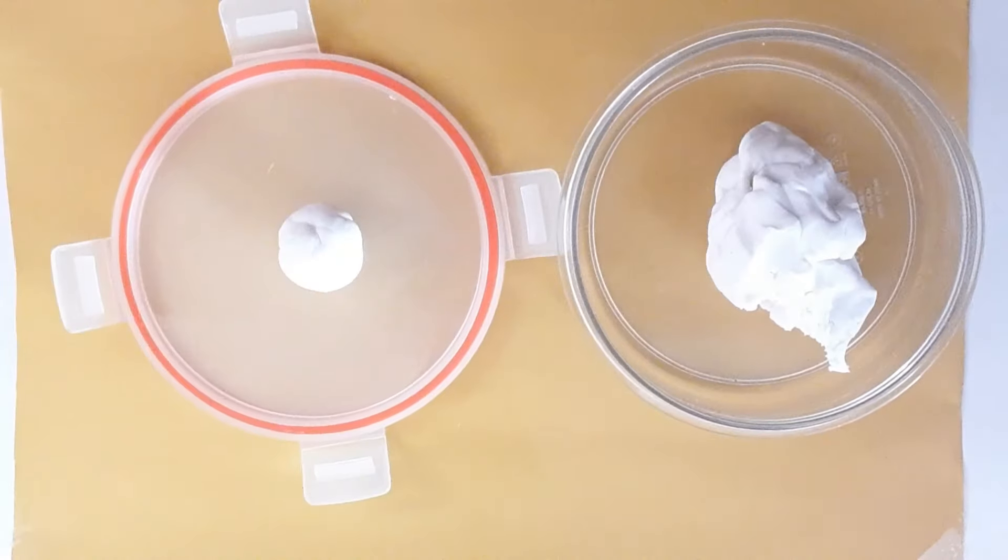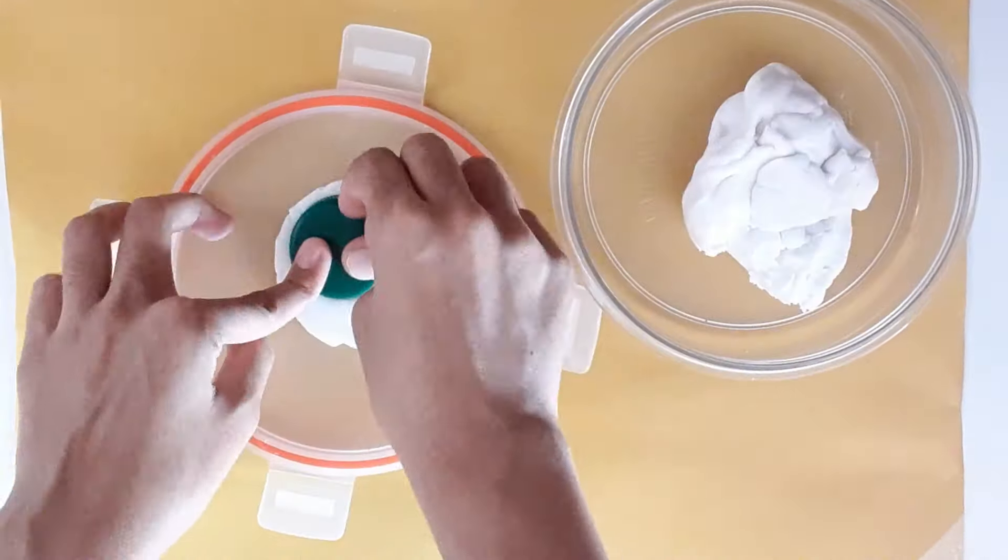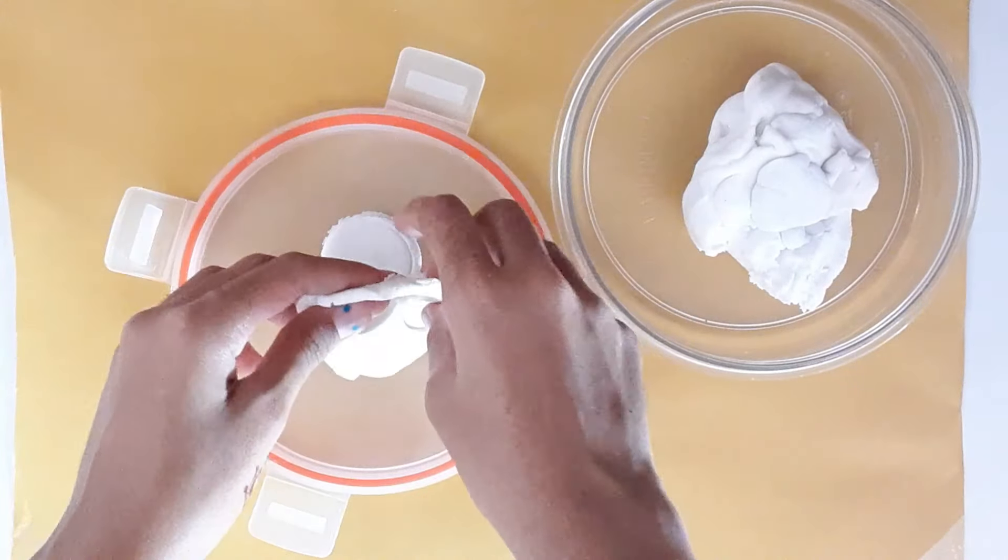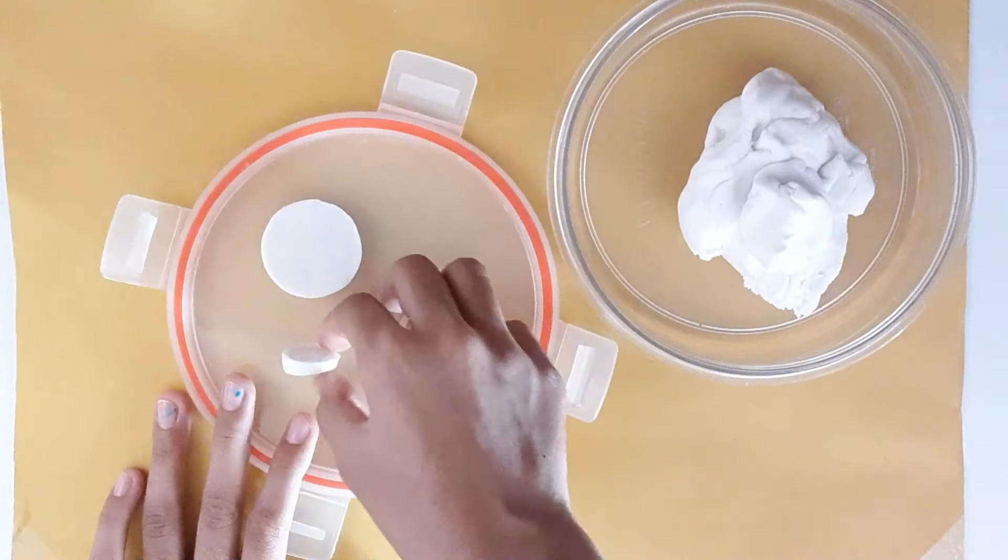Start by making a ball and flattening it out. Now I am using these two circular objects to cut the clay out and will remove the excess clay. Using my fingers, I am going to smoothen out the edges.